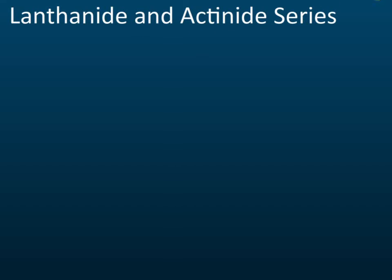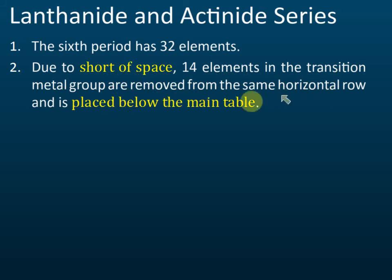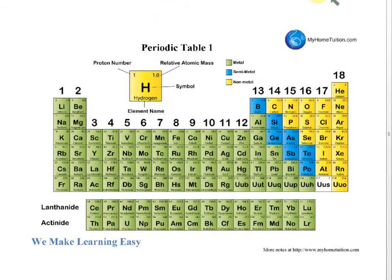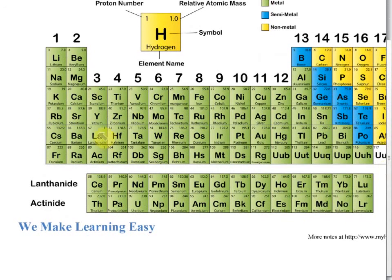The sixth period has 32 elements, including the lanthanide series. Due to shortage of space, 14 elements in the transition metal group are removed from the same horizontal row and placed below the main table.